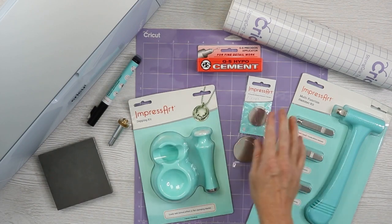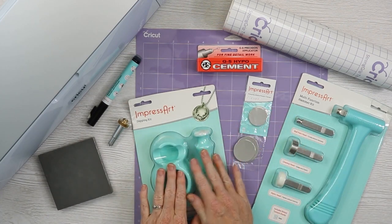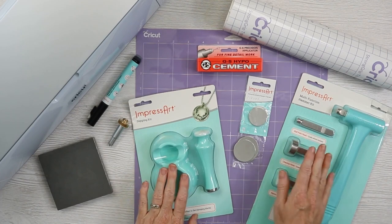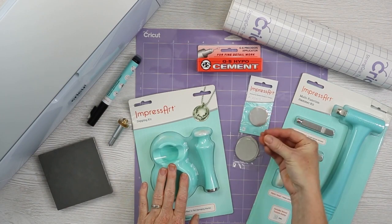And then once we get it engraved, we are going to make it into a ring dish with their dapping kit, as well as hammer kit. And then we're using two sizes. You don't have to, but I'm going to add a base to the ring dish to raise it up a little bit.